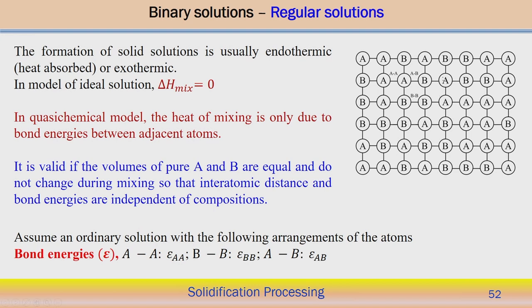With this, we can see that for an ordinary solution, considering the arrangement of atoms, we have bond energy between A-A atoms (ε_AA), bond energy between B-B atoms (ε_BB), and bond energy between A and B atoms (ε_AB). The figure shows specific arrangements of atoms in the solution, with several possible connection probabilities: AA, BB, or AB. These are the three ways atoms can be configured or connected, and based on that we can estimate the bond energy.